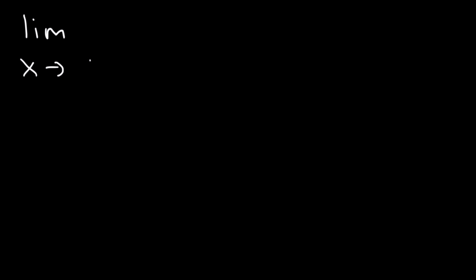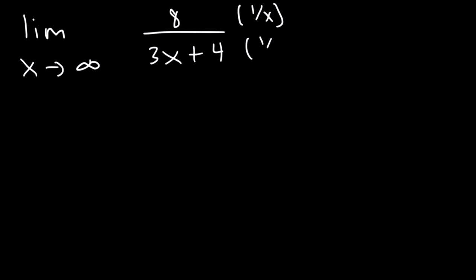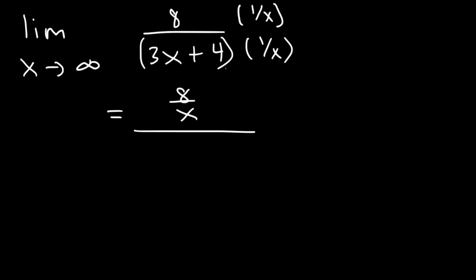What is the limit as x approaches infinity of 8 divided by 3x plus 4? What process can we use to figure this out? What we need to do is multiply the top and the bottom by 1 over x. So this is going to be equal to 8 divided by x. On the bottom, we distribute: 3x times 1 over x is 3, and 4 times 1 over x is 4 over x.